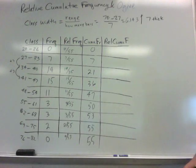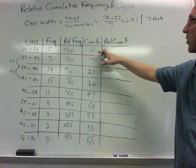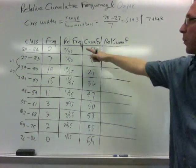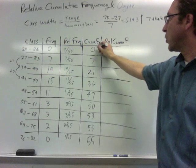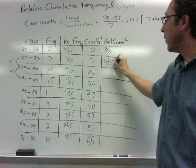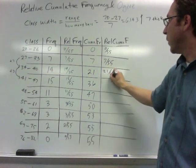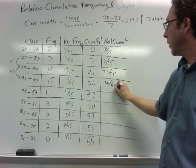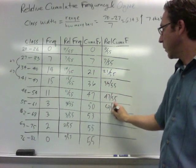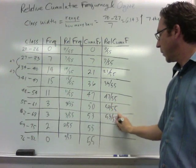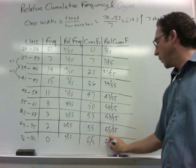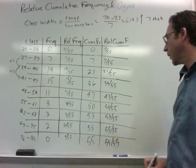For the cumulative relative frequency, again, that's just taking these totals here. And then again, it's relative to how many were actually there, which is 55. So we're going to turn these into a percent. So 0 out of 55, 7 out of 55, 21 out of 55, and so on.